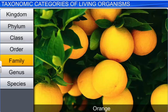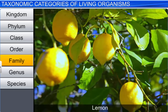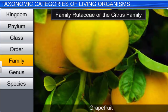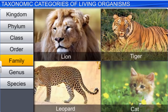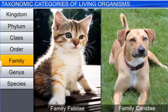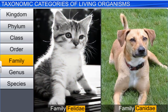Likewise, the lion, the tiger, the leopard, and the cat fall into the family Felidae. Although a cat and a dog exhibit some similarities and some differences, they are separated into two different families, Felidae and Canidae, respectively.